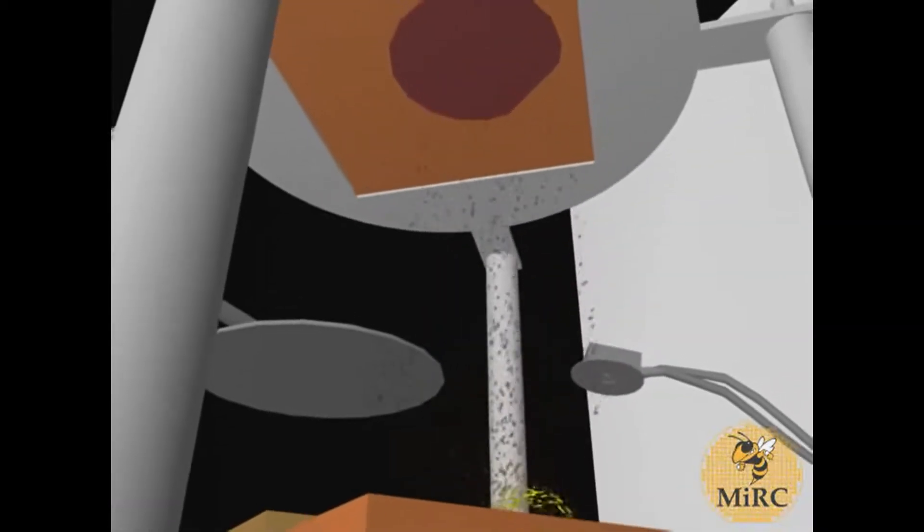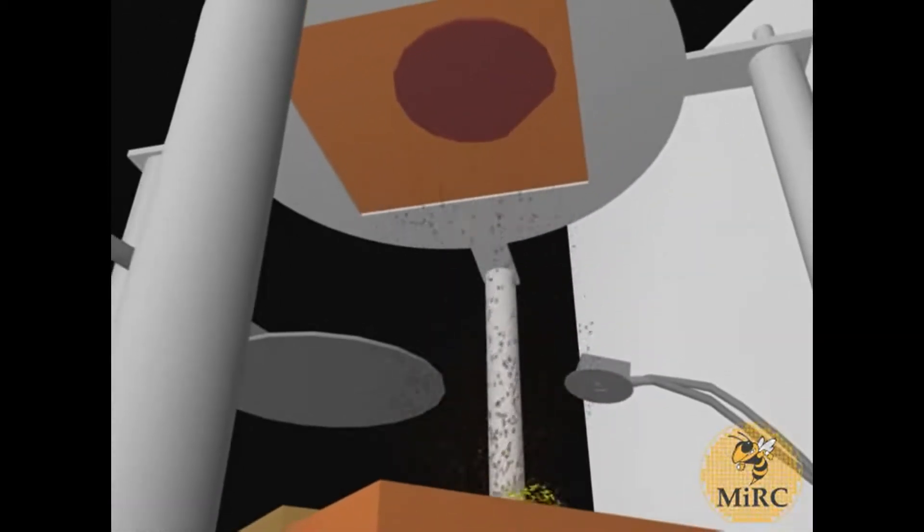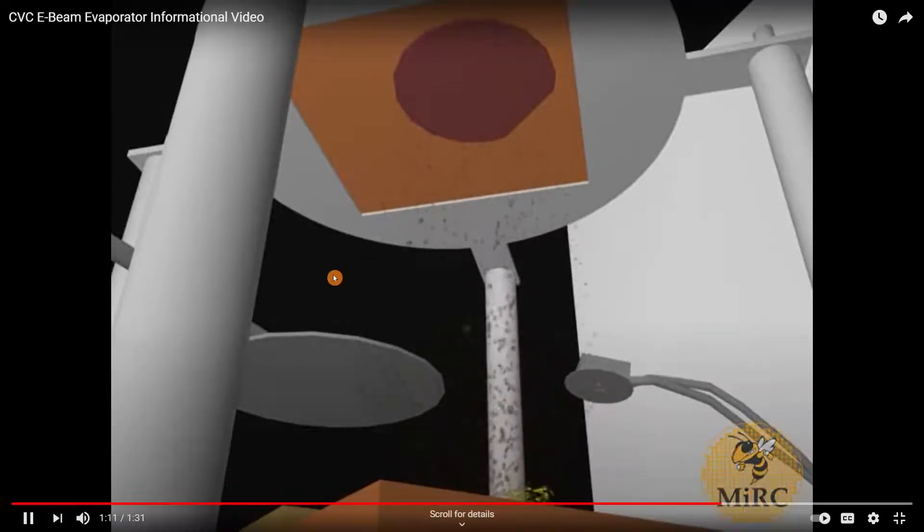Once the desired rate is reached, the shutter is opened and the sample is exposed to the evaporating metal. The desired rate of evaporation and the amount of metal to be evaporated can be set using the deposition controller.